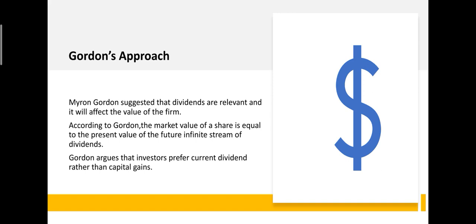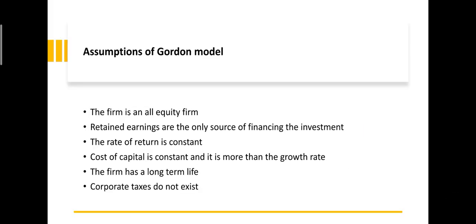Gordon argues that shareholders prefer current dividends over capital gains. Shareholders will opt for current dividends rather than retaining earnings for future capital gains. This is a key argument in Gordon's approach, where R and K are assumed constant.